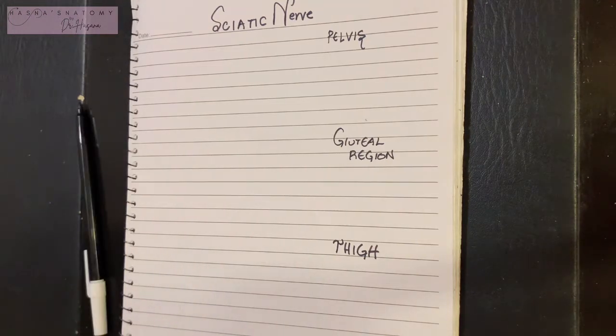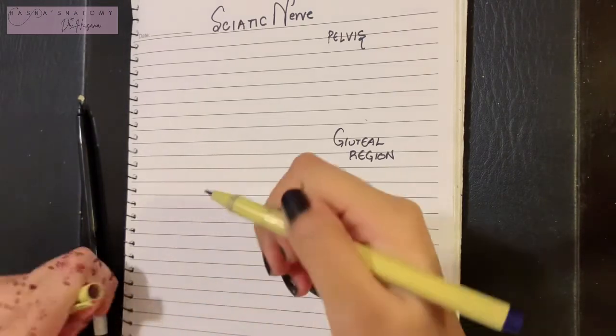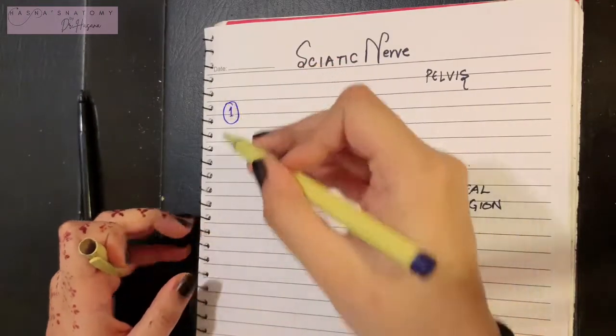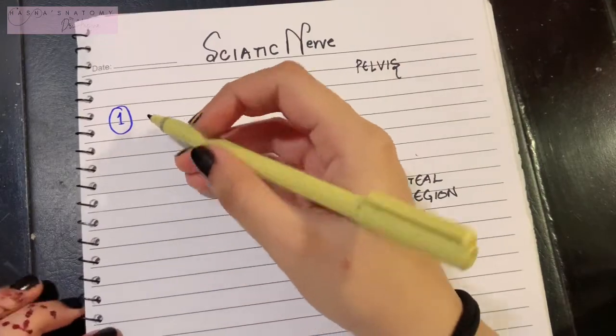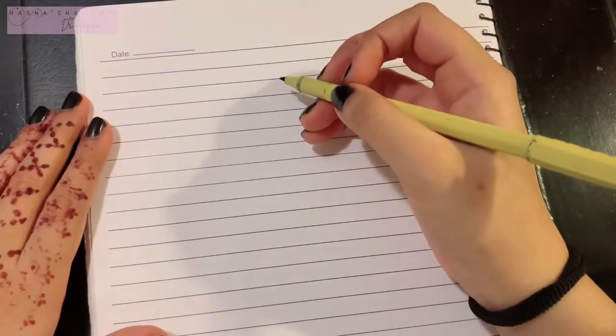First and foremost, it is important to know what the sciatic nerve's origin is. Point number one: sciatic nerve basically originates from the sacral plexus. Let me just quickly define how sciatic nerve originates.